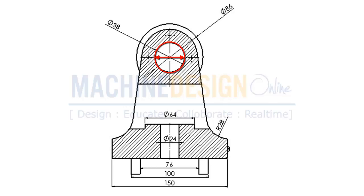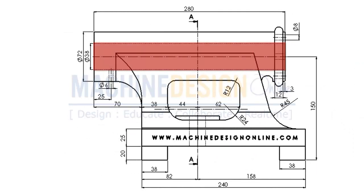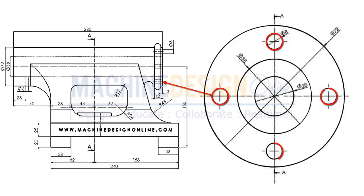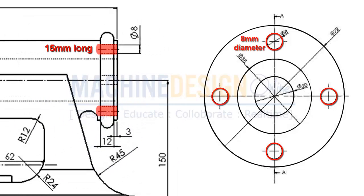Given drawing shows hole of 38mm diameter which is 280mm long. There is another hole of diameter 24mm and 44mm deep as shown in left hand side view. Four holes of 8mm diameter, having 15mm long also mentioned in drawing.